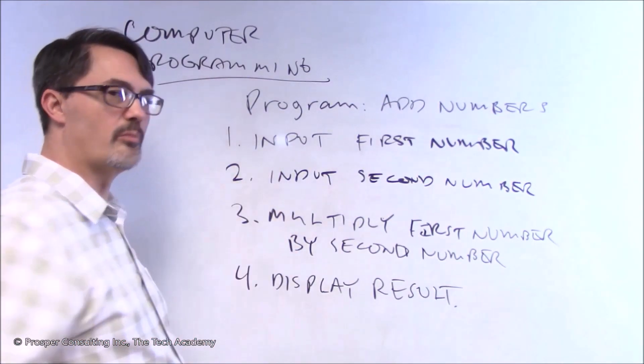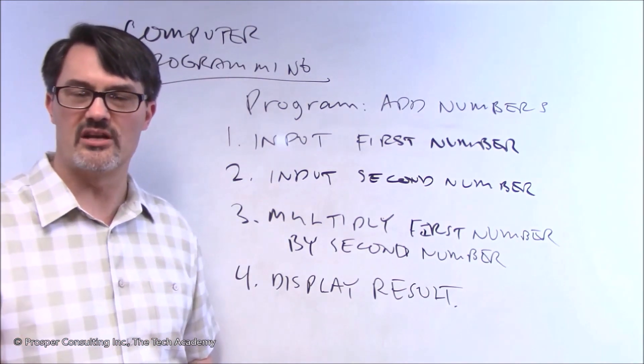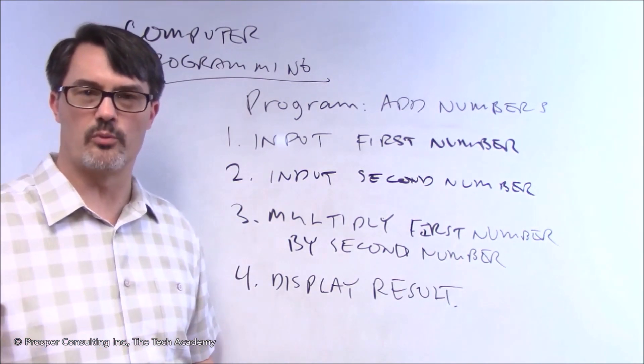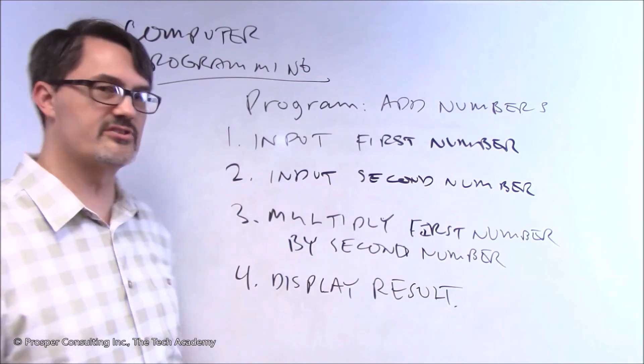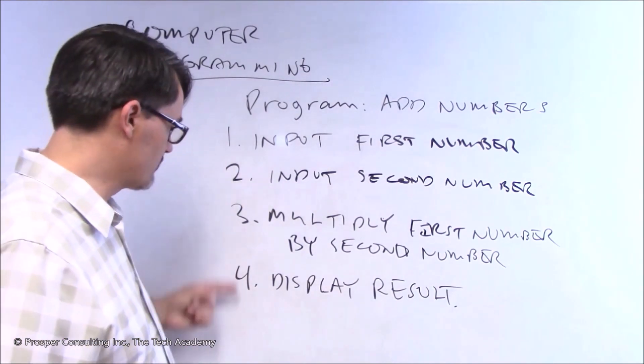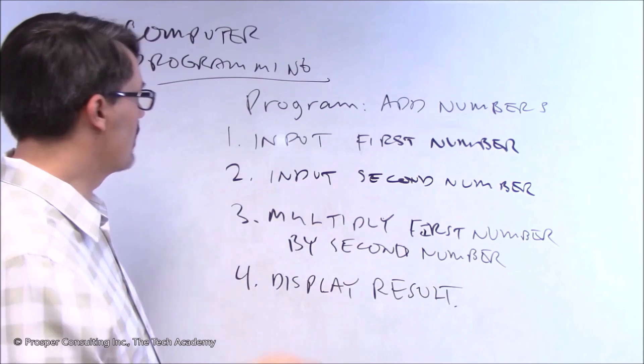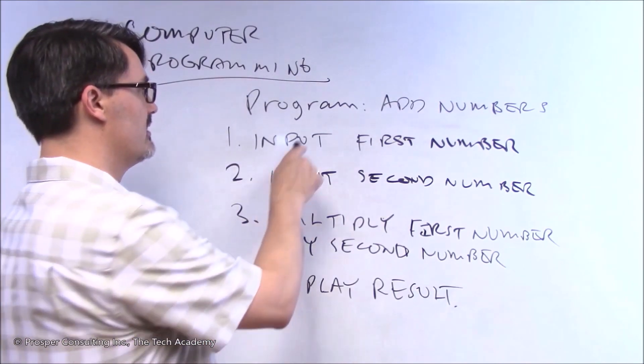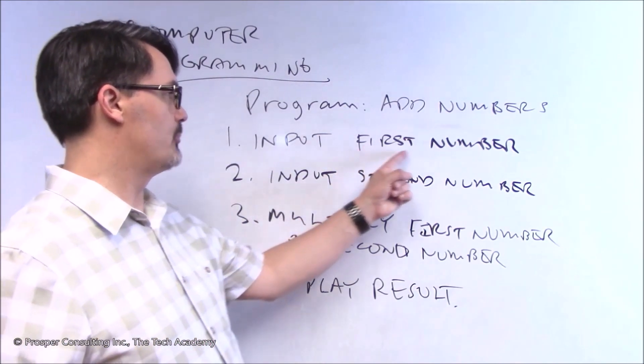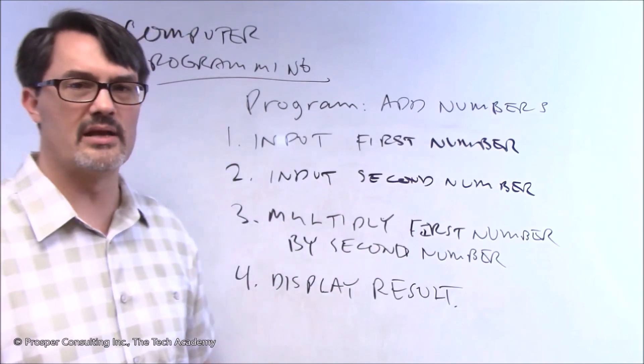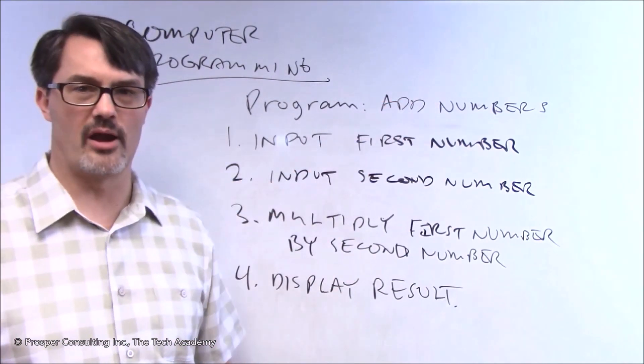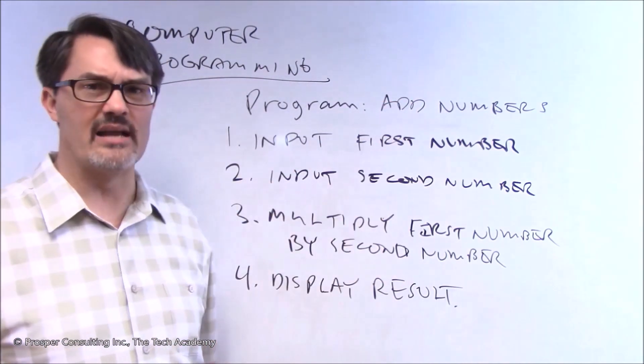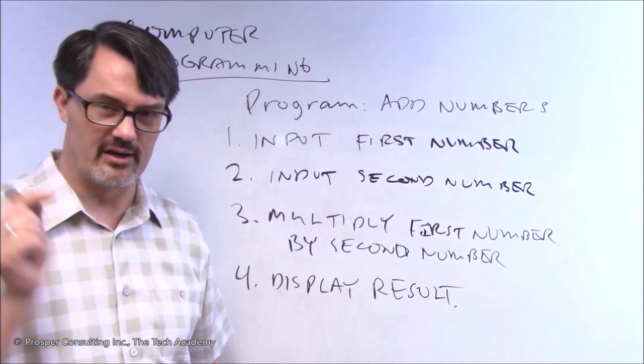You'll have a first instruction. Remember when we talked about the fundamental elements of any computer program? You have to tell the computer where to start. It would start, in this case, at the first instruction. And when it got through all the instructions, it would be done. So the first instruction for the computer would be to receive input - and that input is, what's the first number in our add numbers program? Once it had done that, i.e., the user entered in a number like five,